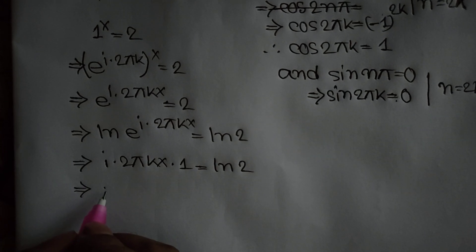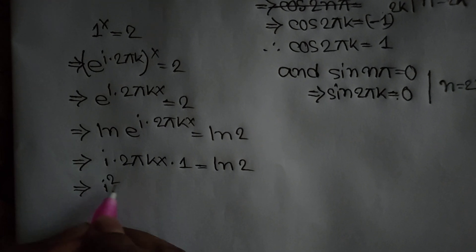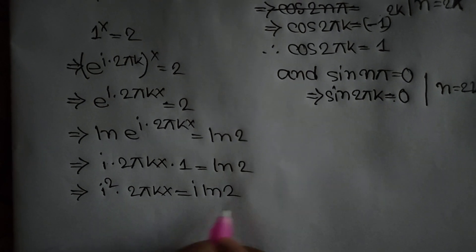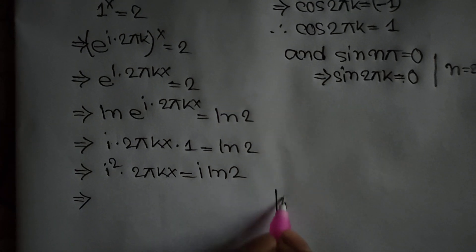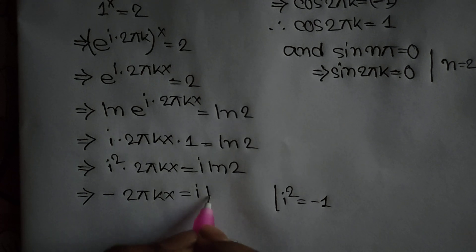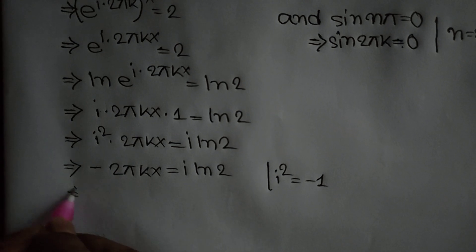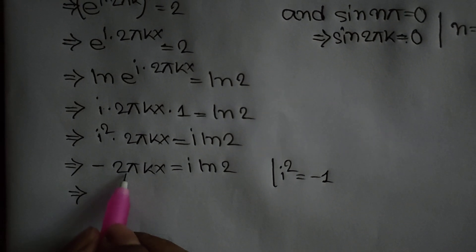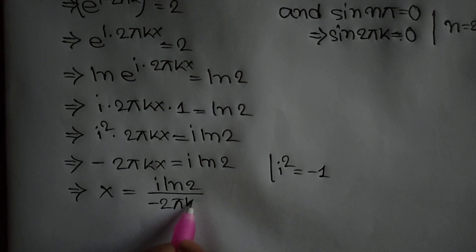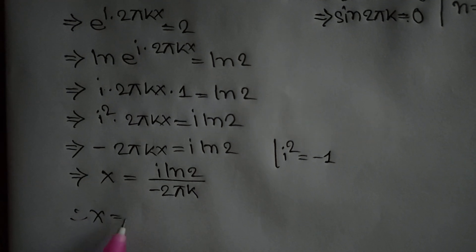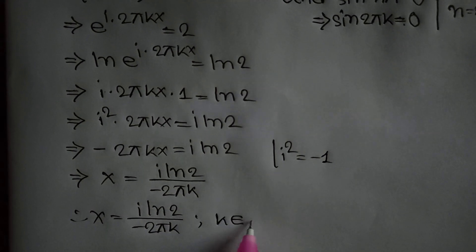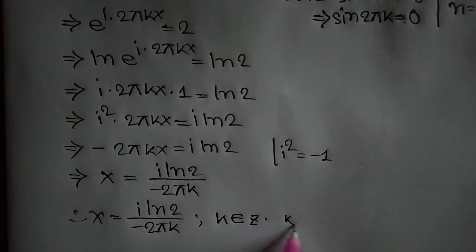Multiplying both sides by i, we get i squared times 2πkx equals i times ln of 2. Since i squared equals negative 1, we can write negative 2πkx equals i times ln of 2. Dividing both sides by negative 2πk, we get x equals i times ln of 2 over negative 2πk, where k is an integer and k is not equal to 0.